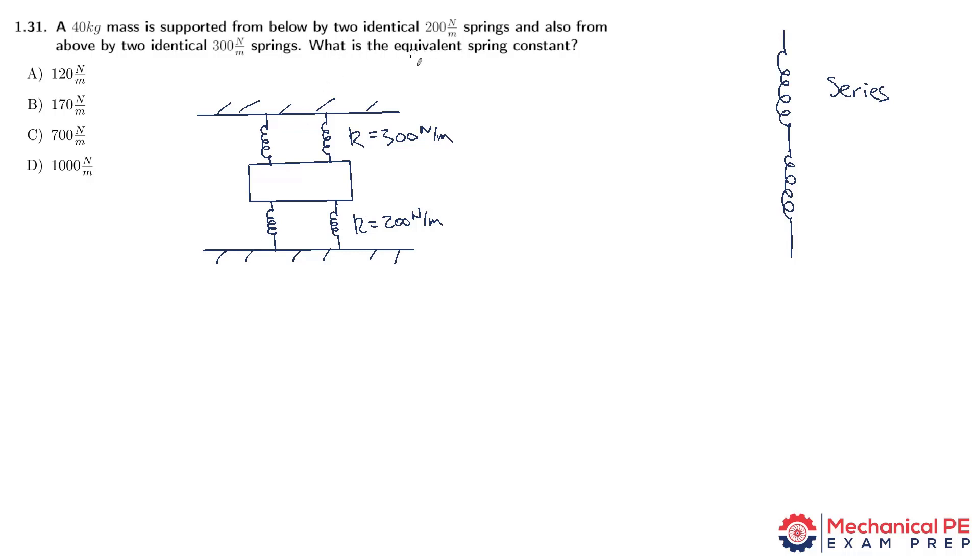How do we actually find the equivalent spring constant based on that insight? We're going to use the search terms springs in parallel, and you can also use equivalent spring constant. Those will both bring you to the equation we need. But it's really nothing fancy. It just says that the equivalent spring constant is the sum of the individual spring constants.